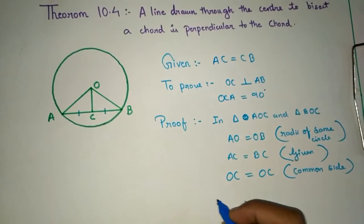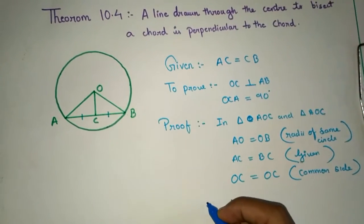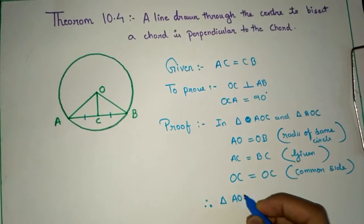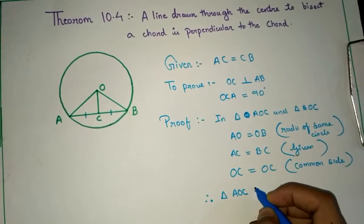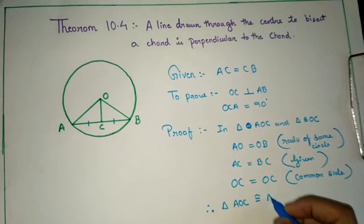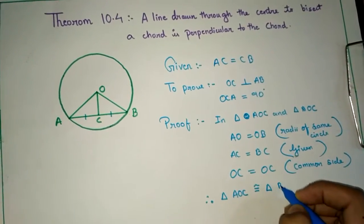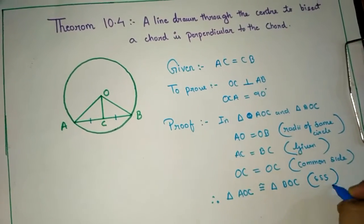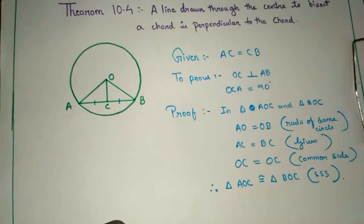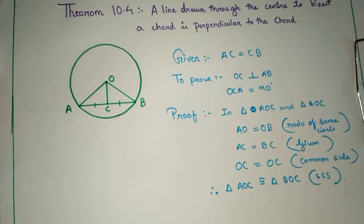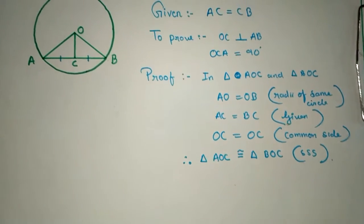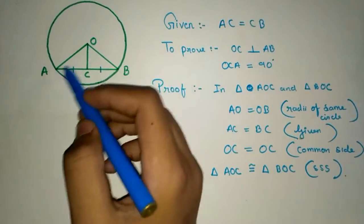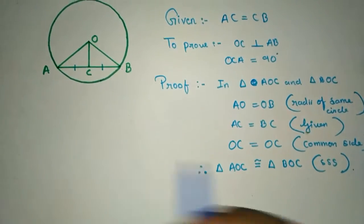By SSS congruency condition, triangle AOC is congruent to triangle BOC. Friends, you can see how easily I am proving this theorem. Now, since these two figures are congruent, I can proceed to the next step.